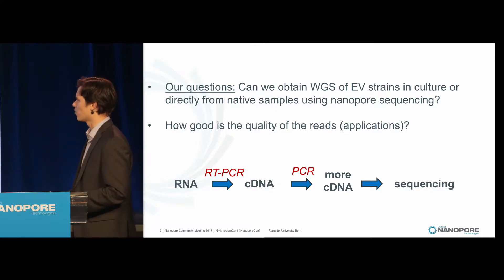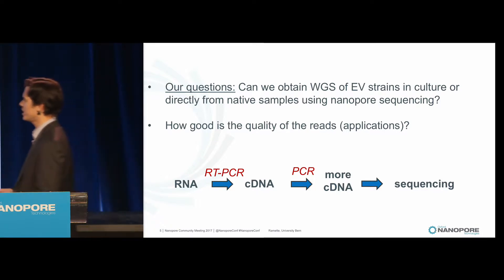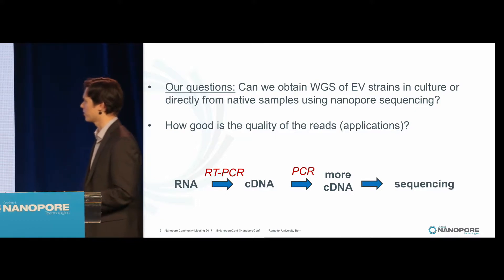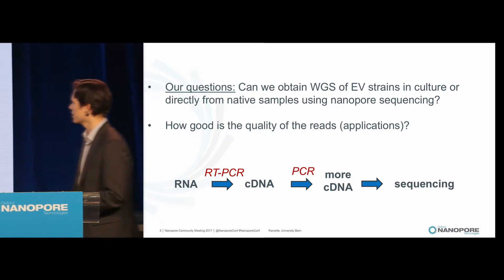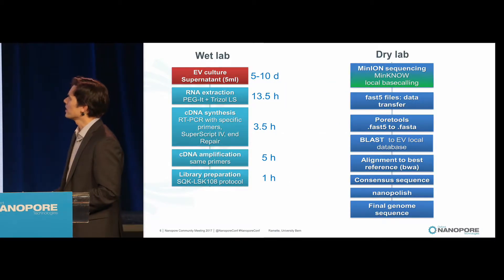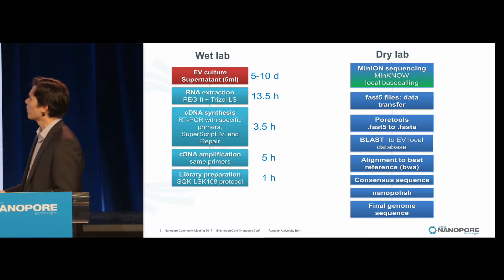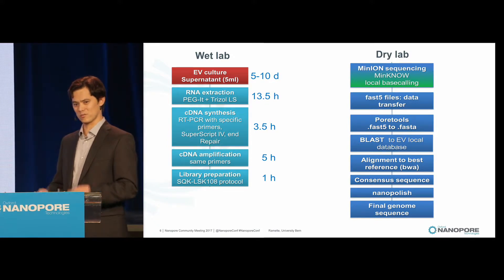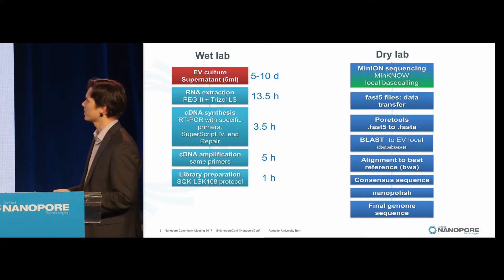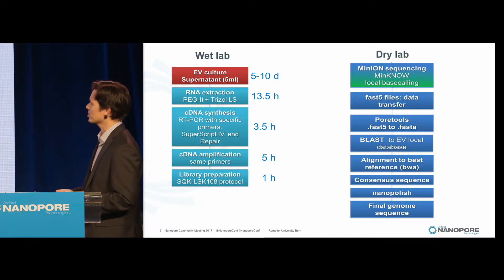This is a traditional protocol going from RNA to cDNA. Then you need to go to PCR because very often the target has a very low concentration, and then you go to sequencing. This is our wet lab protocol, where we start from a culture — it takes already 5 to 10 days just to get the culture. Not all enterovirus can produce a positive culture. Then we go to RNA extraction, cDNA synthesis, cDNA amplification with specific primers, long-range PCR, and then library preparation.